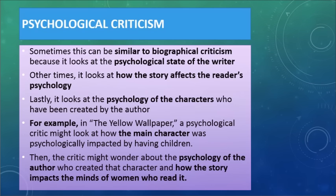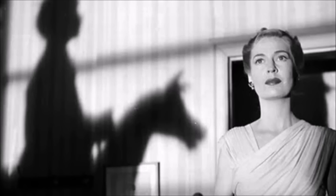Psychological criticism is somewhat similar to biographical criticism. It looks at how the story affects the reader's psychology, the psychology of the characters, and sometimes the psychology of the author. For example, in the Yellow Wallpaper, we learn that the author herself was put on bed rest for a long period of time, and this caused her to feel a little crazy — how did that shape the story? For another example, when we looked at The Rocking Horse Winner, what was the psychology of Paul and his mother? What drove Paul to act the way he did, and how did his psychological problems cause him to die?